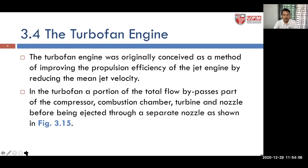The turbofan engine was originally conceived as a method of improving the propulsion efficiency of the jet engine by reducing the mean jet velocity. In the turbofan engine, a portion of the total flow bypasses part of the compressor as well as the combustion chamber, the turbine, and nozzle, before being ejected through a separate nozzle, as shown in figure 3.15.